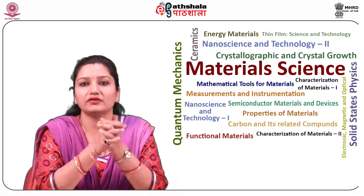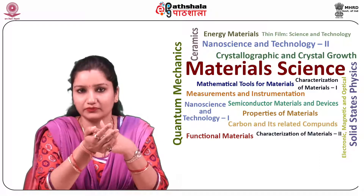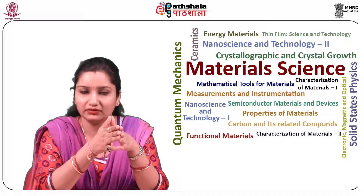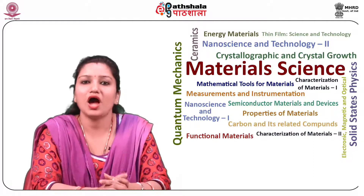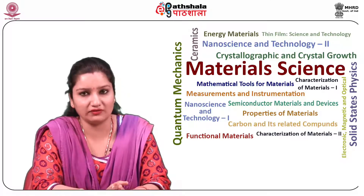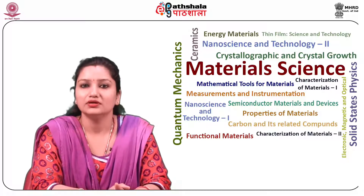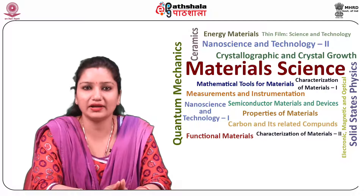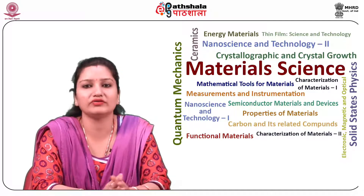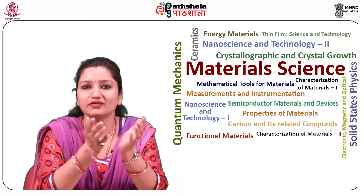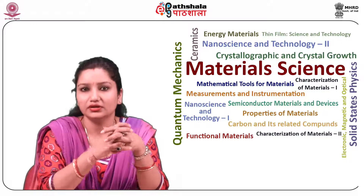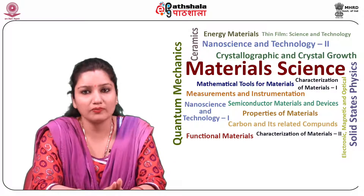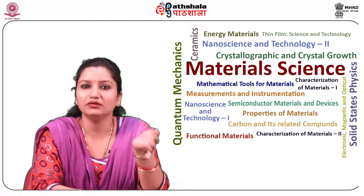Conducting materials such as polycrystalline silicon and aluminum, as well as insulating films such as various forms of silicon dioxide, silicon nitride and others, are used to connect and isolate transistors and their components. The conductivity of silicon can be altered with the application of voltage by selectively doping various regions. By creating structures of these different components, millions of transistors can be fabricated and assembled together to form the complex circuitry of a modern microelectronic device.